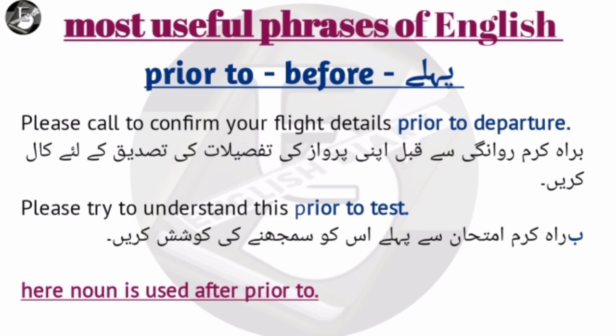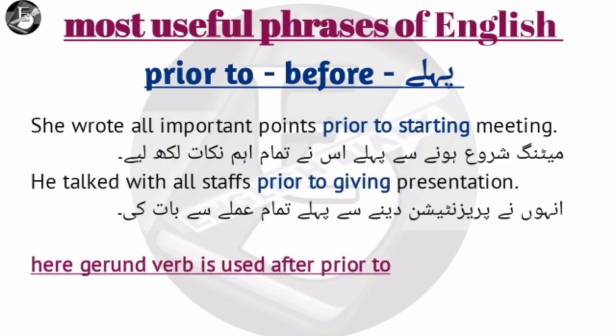To jab aap noun use karenge, to simply aapka jo bhi sentence hai — aap present mein banao, past mein banao, future mein banao. Prior To ke baad aapne noun use kerna hai. Tense ki is mein koi qaid nahi hai — aap kisi bhi tense mein use kar sakte hain, kyunki yeh phrase hai Prior To. Now look at some examples with verb. She wrote all important points prior to starting the meeting. Meeting shuru karne se pehle usne tamam ehem nukat likh liye.